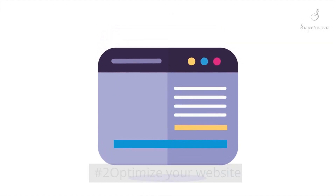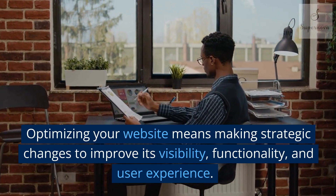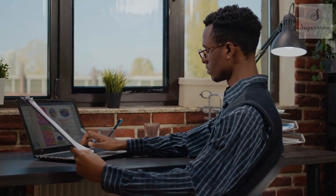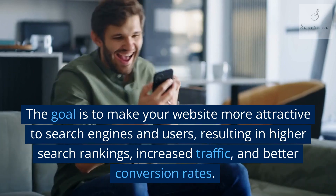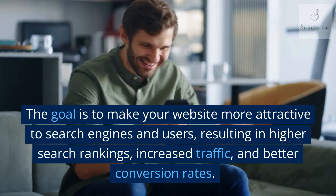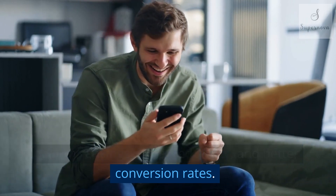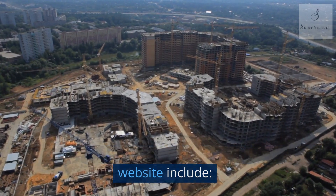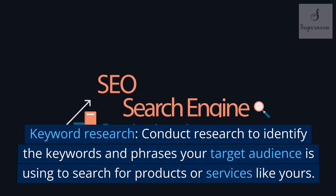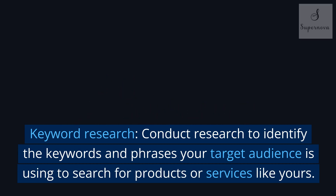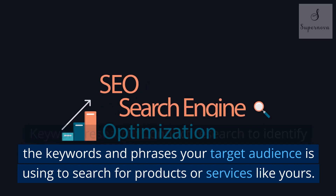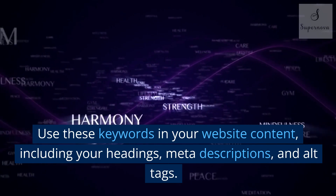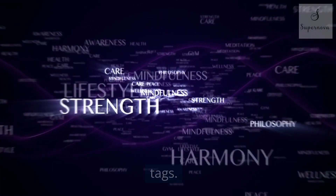Number 2: Optimize your website. Optimizing your website means making strategic changes to improve its visibility, functionality, and user experience. The goal is to make your website more attractive to search engines and users, resulting in higher search rankings, increased traffic, and better conversion rates. One key area to focus on is keyword research: conduct research to identify the keywords and phrases your target audience is using to search for products or services like yours, and use these keywords in your website content, including your headings, meta descriptions, and alt tags.